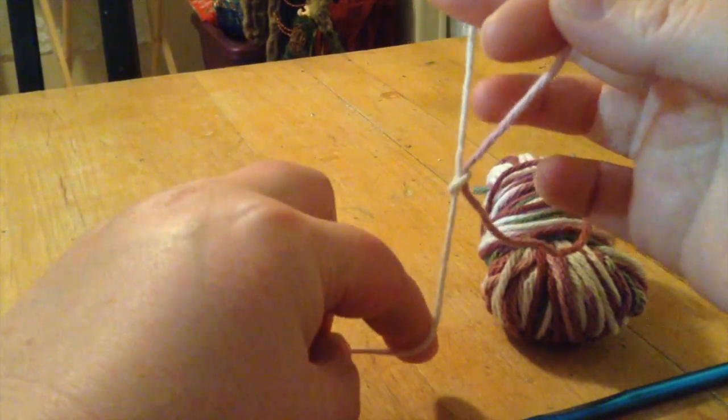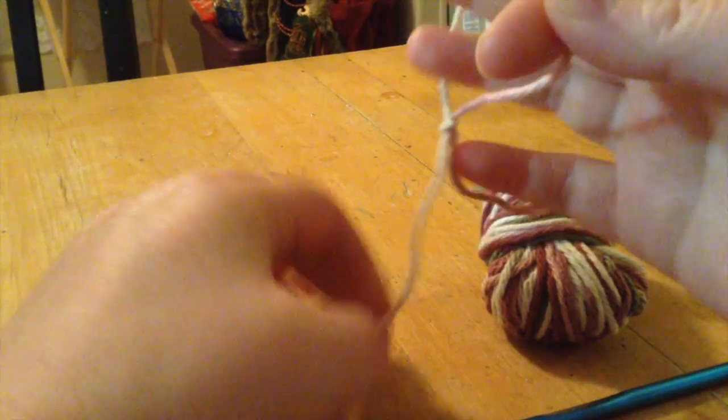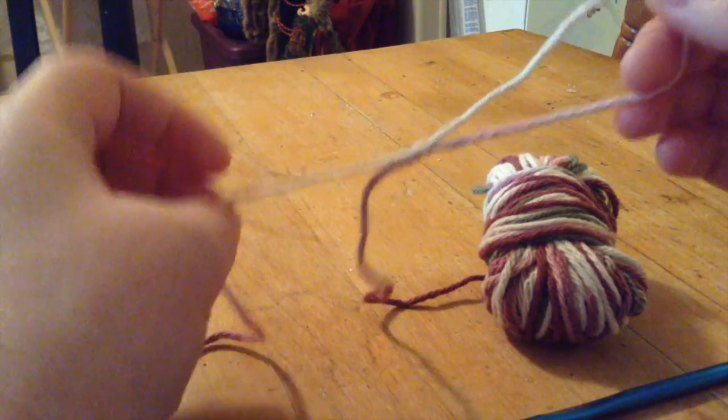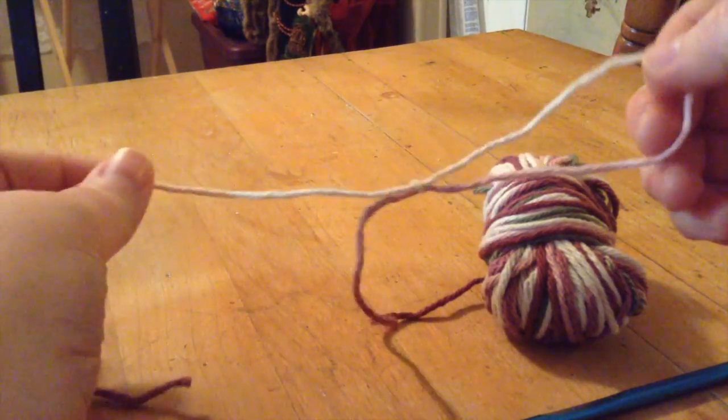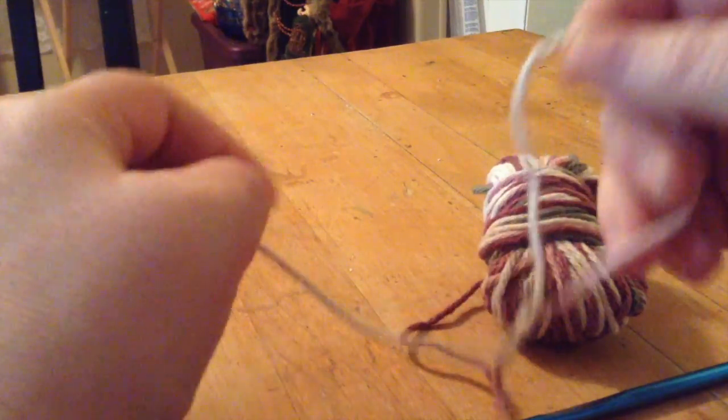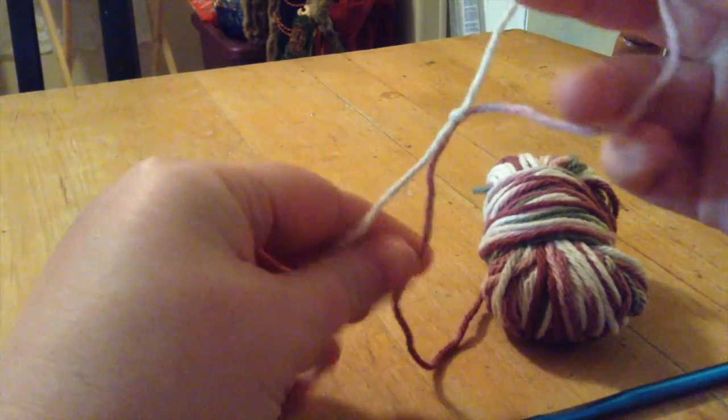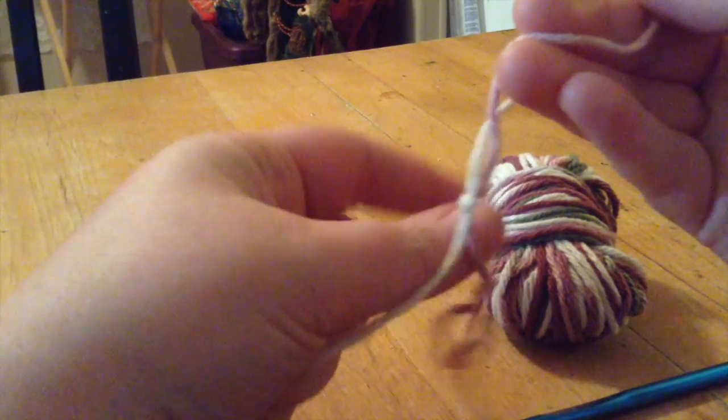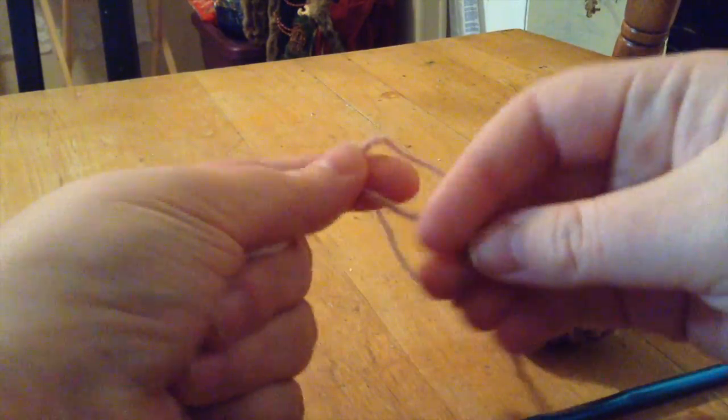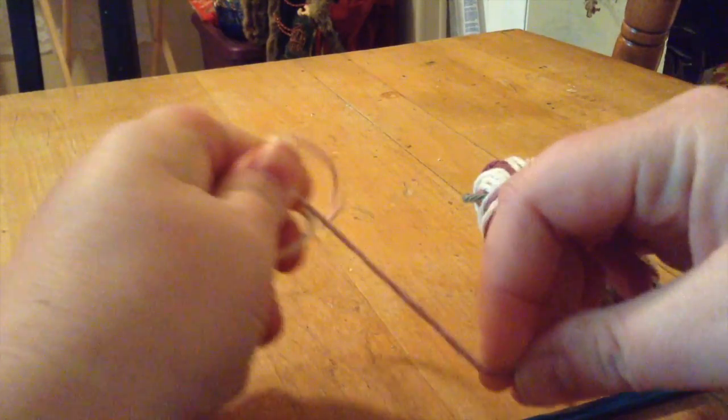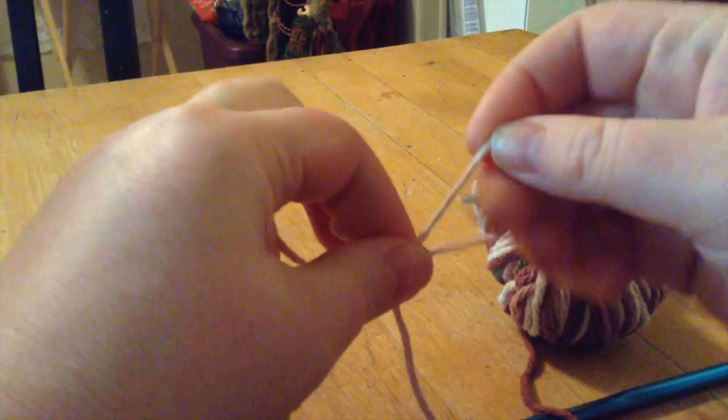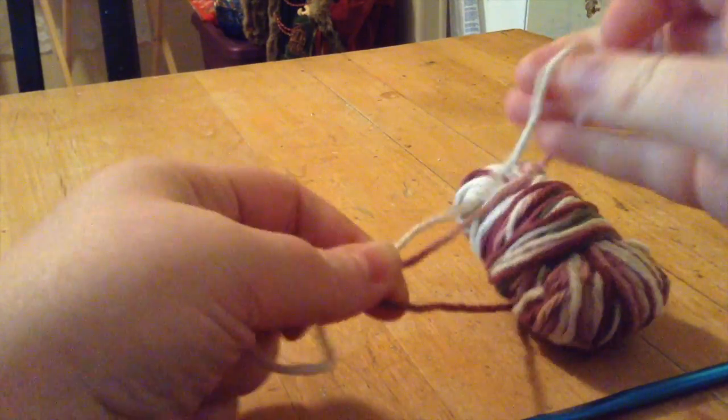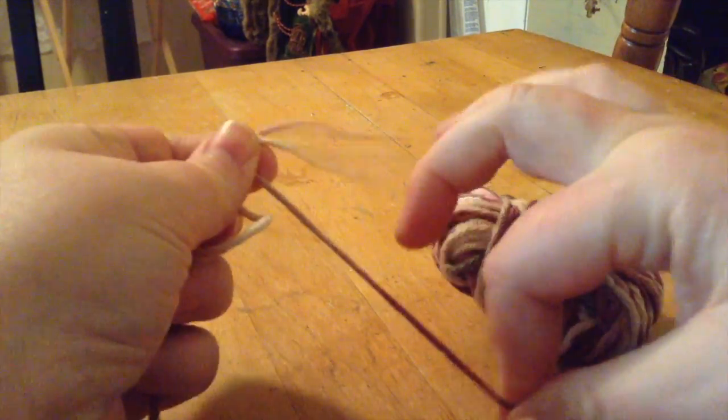I'm going to pull my tail until it's nice and secure. This is called a slipknot. Different people have different ways of doing it; this is the way I do it. The reason it's called slipknot is that you can then hold that, pull on your working yarn and the loop gets bigger or smaller. Pull on the loop and the loop gets bigger, so you can do different sizes.